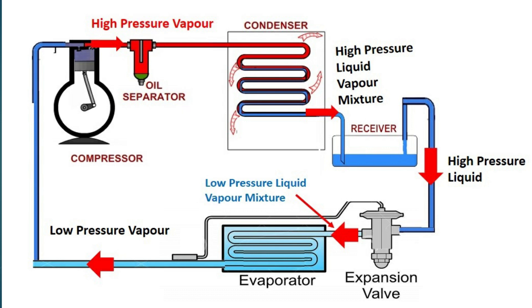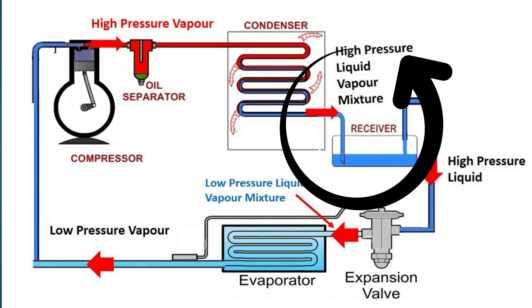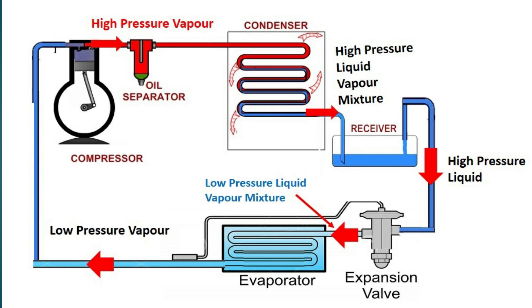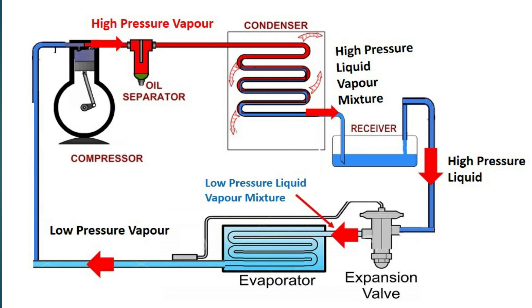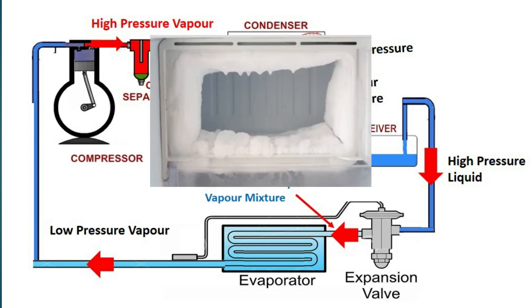The function of the compressor is to compress the refrigerant. This refrigerant passes through the condenser, which rejects heat to the surroundings. After that, it collects into the receiver. The receiver collects the refrigerant, then it expands through the expansion valve. The function of the expansion valve is to expand the refrigerant, so here the liquid-vapor refrigerant at low pressure enters into the evaporator — our freezer.